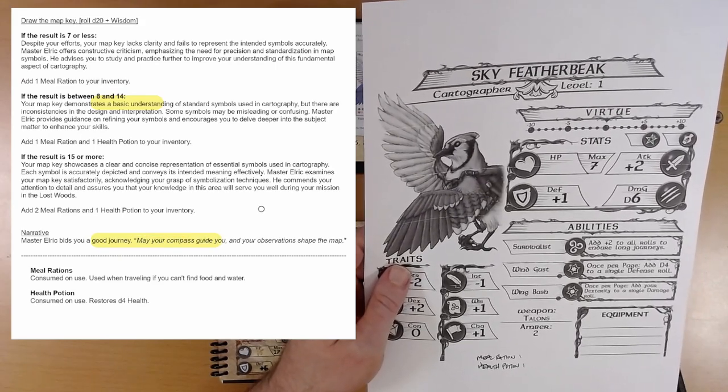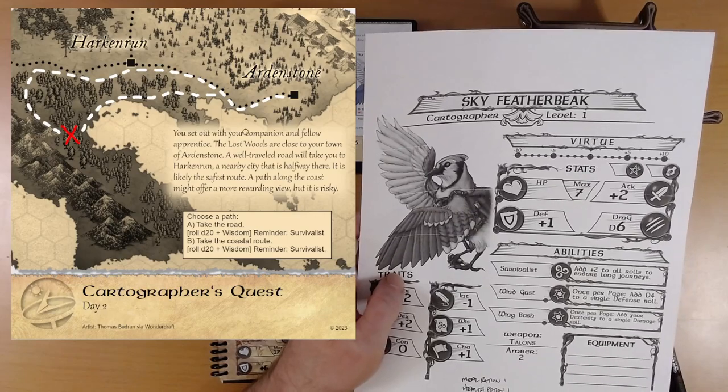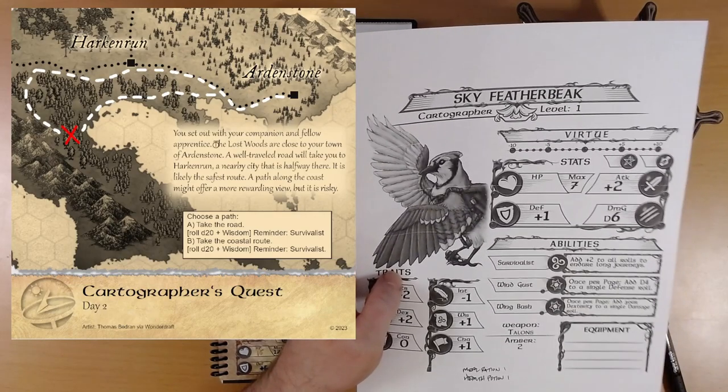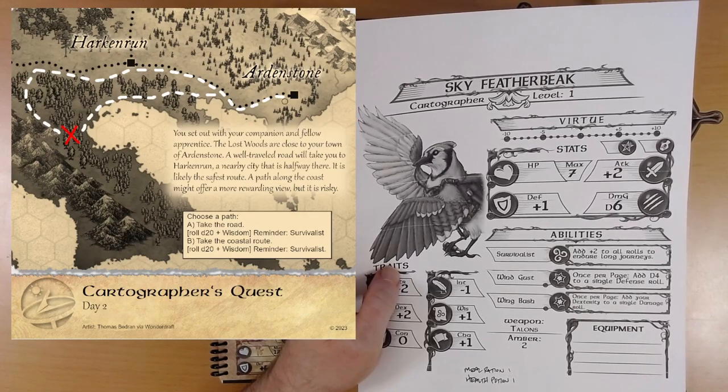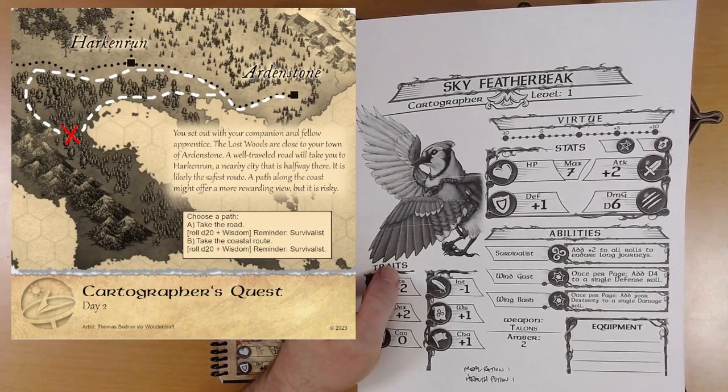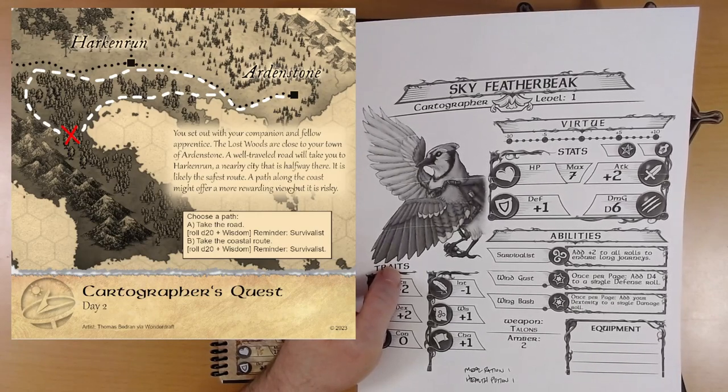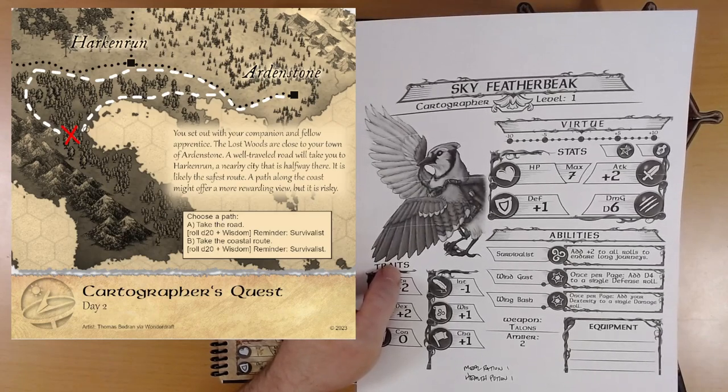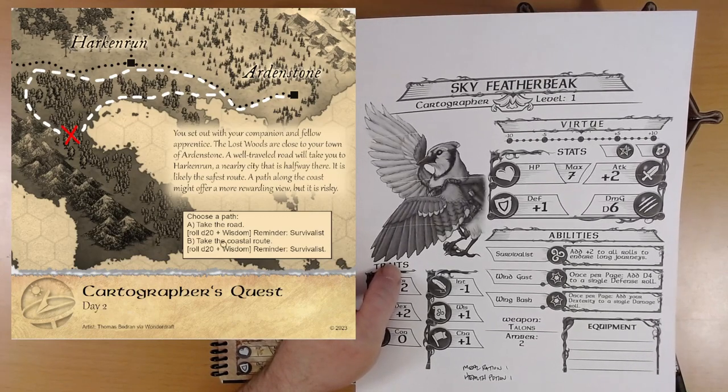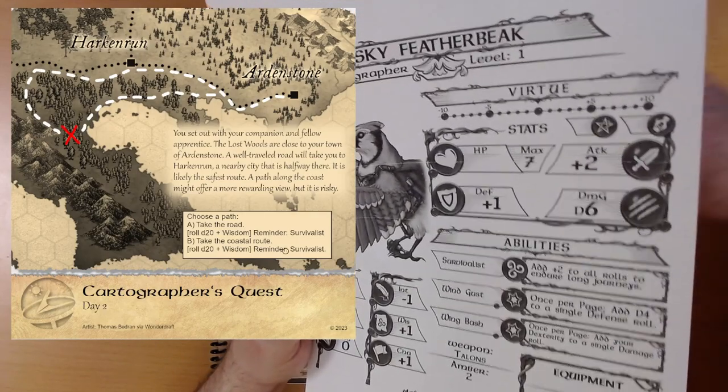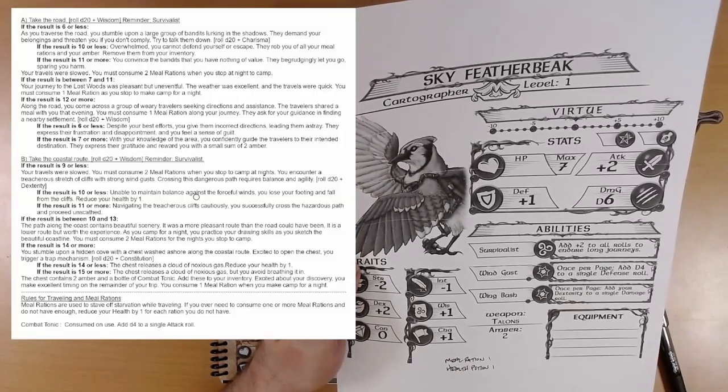Master Elric bids you a good journey. May your compass guide you and your observations shape the map. Yeah, we know this area. You set out with your companion and fellow apprentice. I guess that means we're playing Sky. We're heading out with Ivy. The Lost Woods are close to your town of Ardenstone. A well-traveled road will take you to Harkin Run, a nearby city that is halfway there. A path along the coast might offer a more rewarding view, but it's risky.